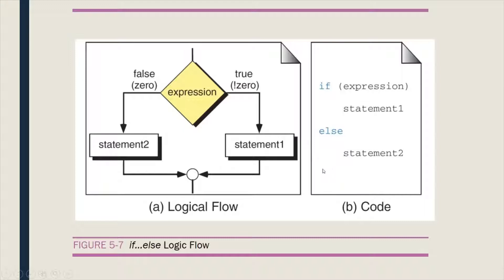This figure shows the code of the logical flow. We have the if statement followed by parentheses. Between the parentheses is the expression. There is no semicolon after the closing parenthesis. After the if statement we have statement one, and the else statement has statement two. There are two statements under the if-else structure, and only one statement will be executed depending on the expression value.